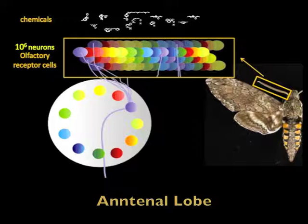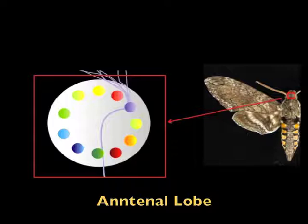The signal is then transformed to the antenna lobe, the primary processing neuropil for olfactory signals.